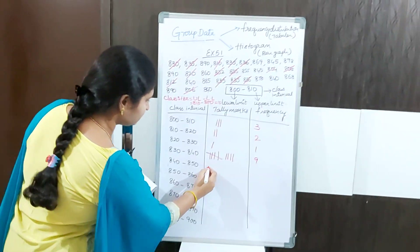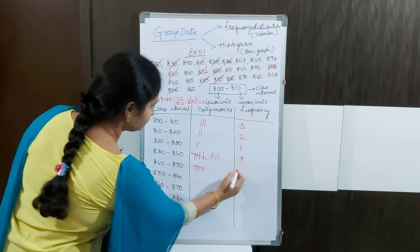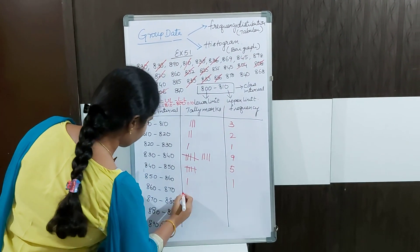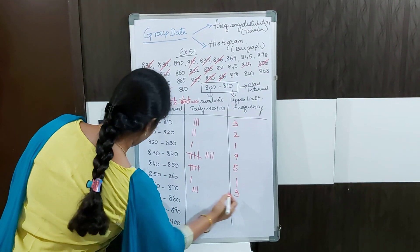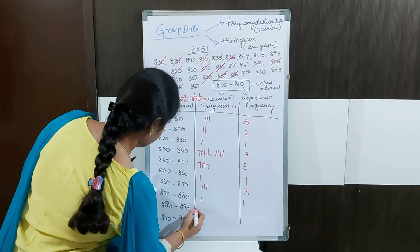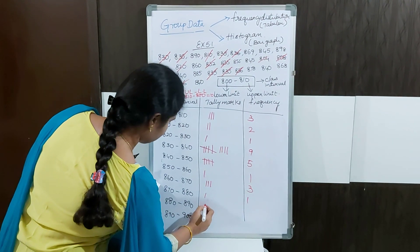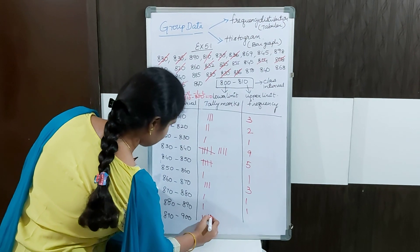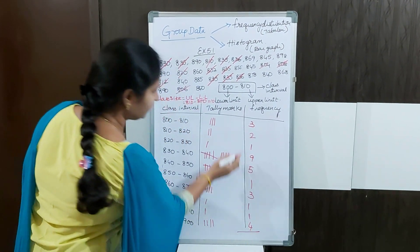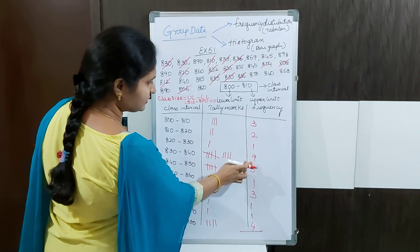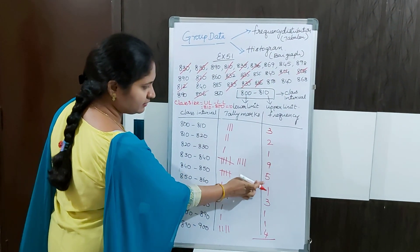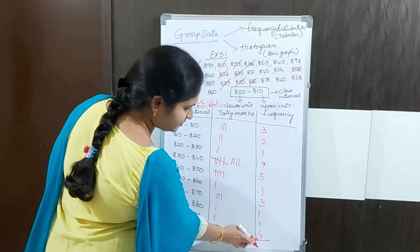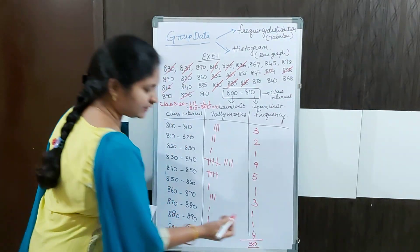The remaining frequencies are: 840–850 gives 5, 850–860 gives 1, 860–870 gives 3, 870–880 gives 1, 880–890 gives 1, and 890–900 gives 4. Totaling: 3 plus 2 is 5, plus 1 is 6, plus 9 is 15, plus 5 is 20, plus 1 is 21, plus 3 is 24, plus 1 is 25, plus 1 is 26, plus 4 is 30 workers total.